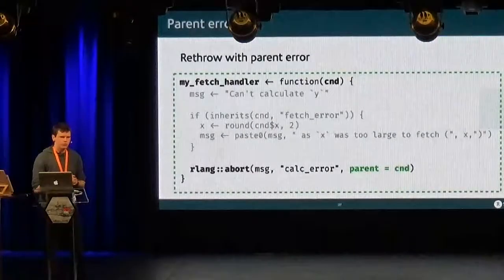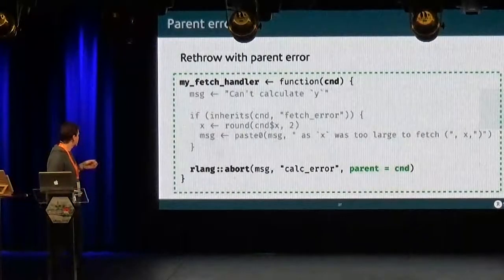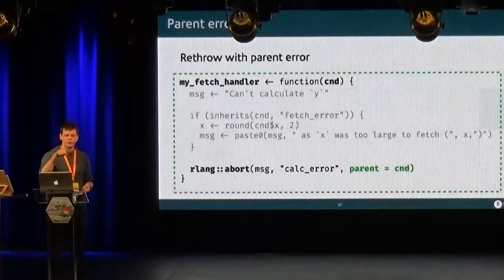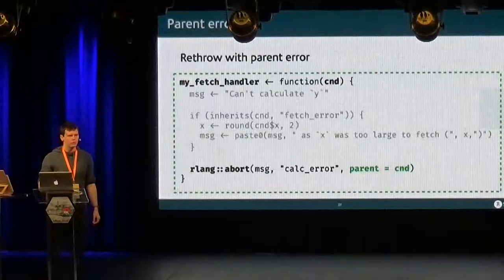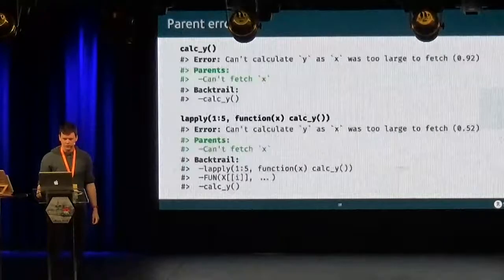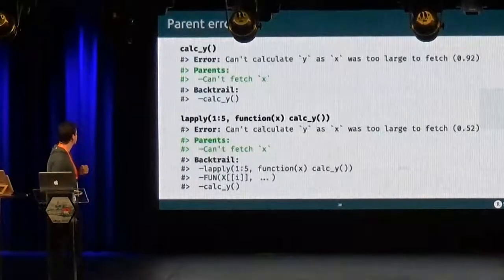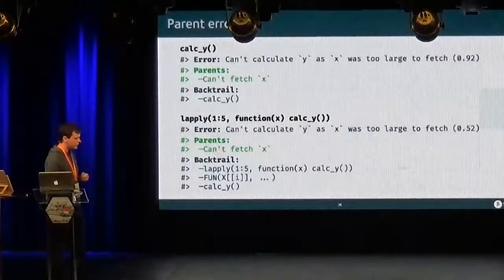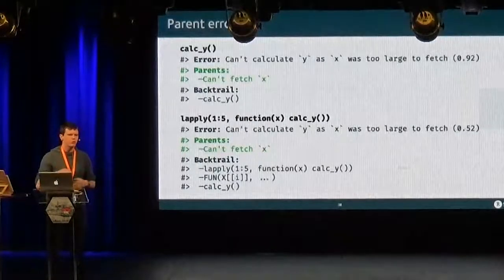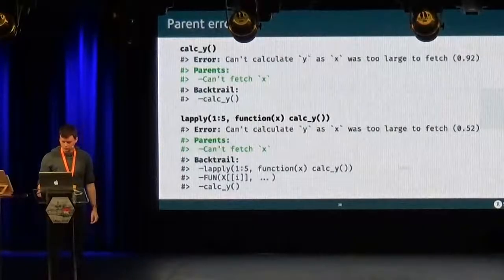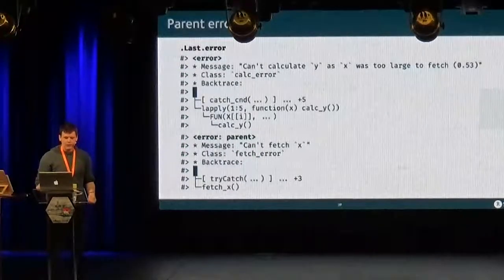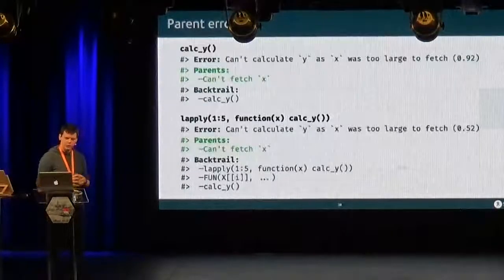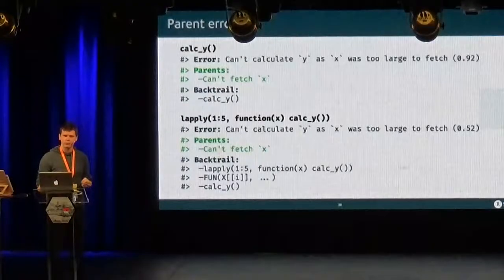And it's really easy to use. So I take the handler from before and I just add parent equal the condition that I caught. And that's it. And then you will get this information as well with the error message. It will say parent is can't fetch X. And if there are multiple parents, you will get all the parents.